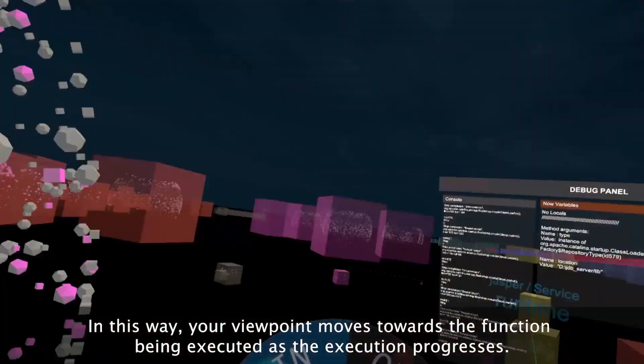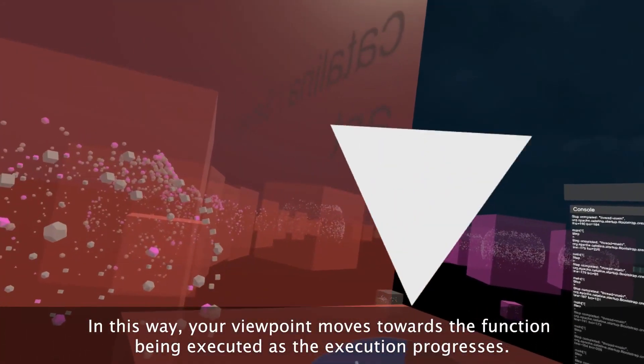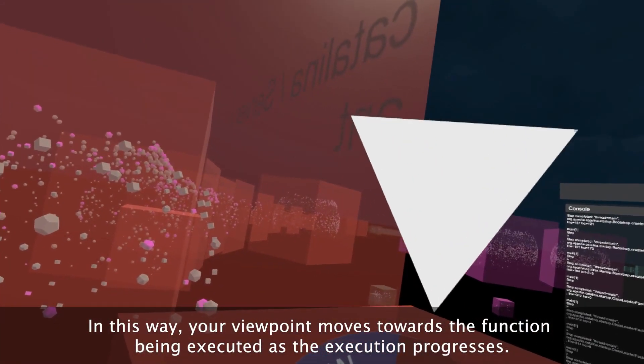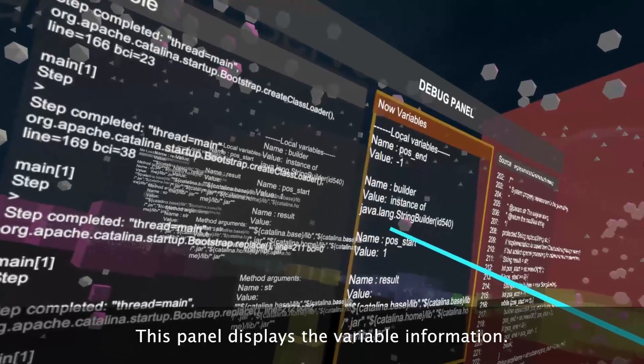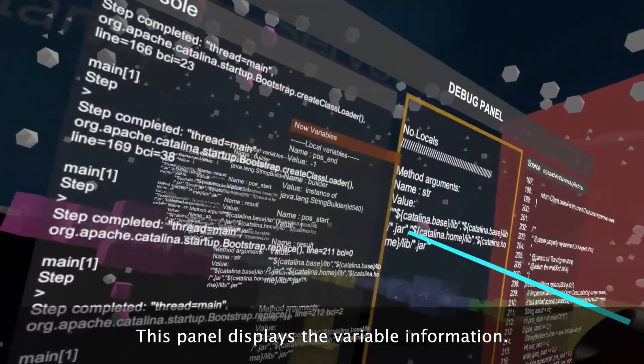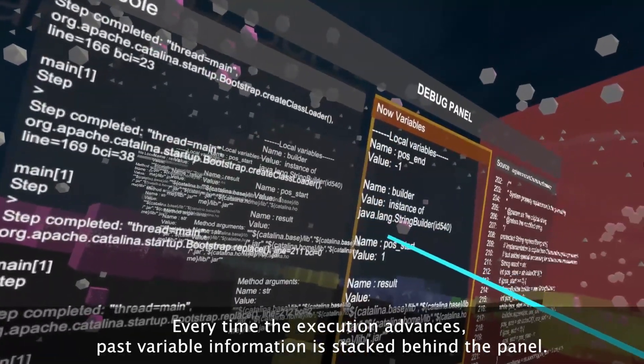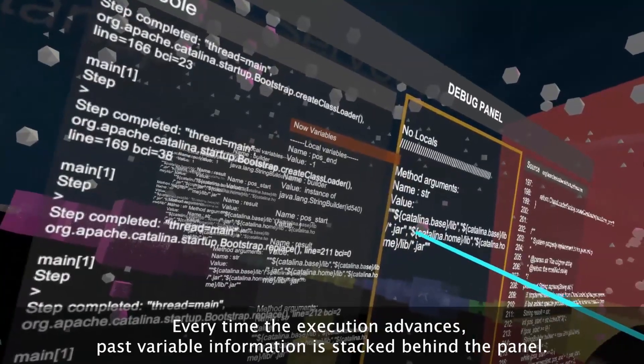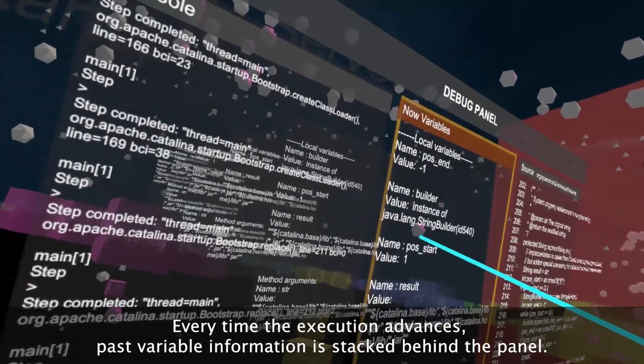In this way, your viewpoint moves towards the function being executed as the execution progresses. This panel displays the variable information. Every time the execution advances, past variable information is stacked behind the panel.